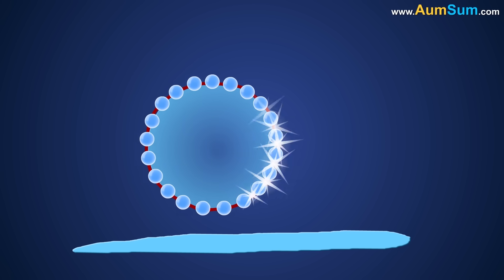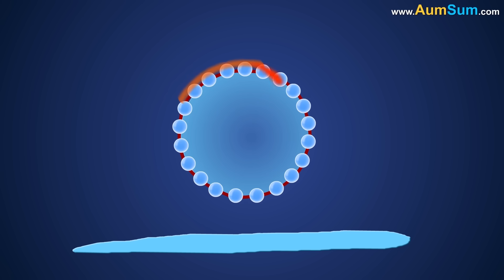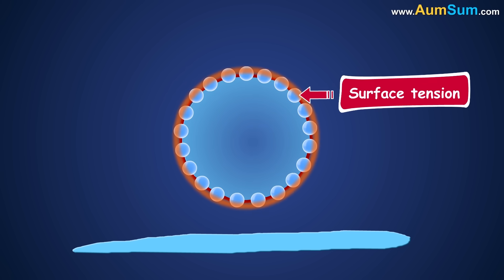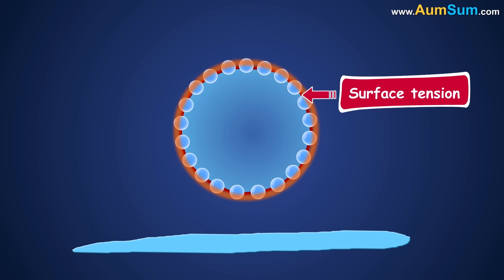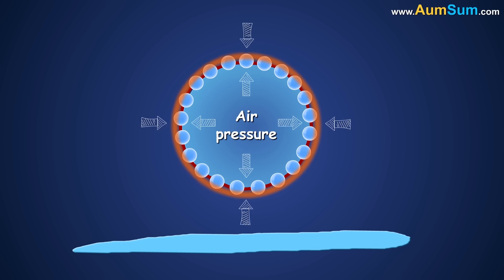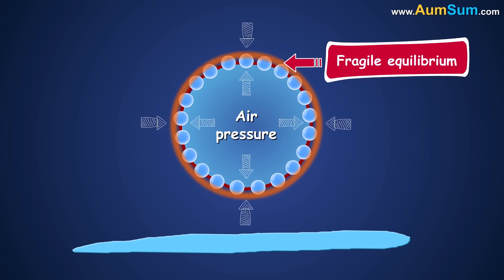These attractive forces between water molecules produce what's called surface tension. This surface tension, along with the air pressure from inside and outside the bubble, creates a fragile equilibrium and keeps the bubble from popping.